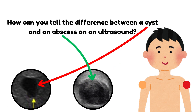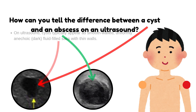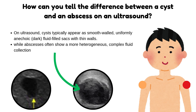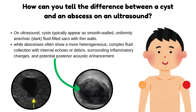How can you tell the difference between a cyst and an abscess on an ultrasound? On ultrasound, cysts typically appear as smooth-walled, uniformly anechoic, dark fluid-filled sacs with thin walls, while abscesses often show a more heterogeneous, complex fluid collection with internal echoes or debris, surrounding inflammatory changes, and potential posterior acoustic enhancement.